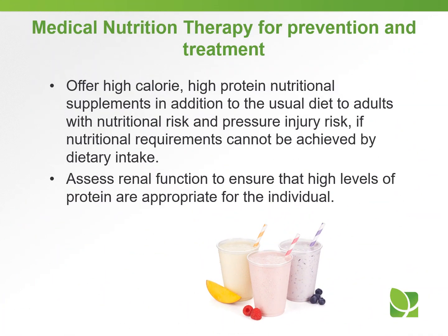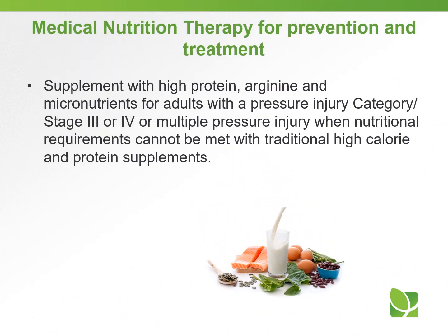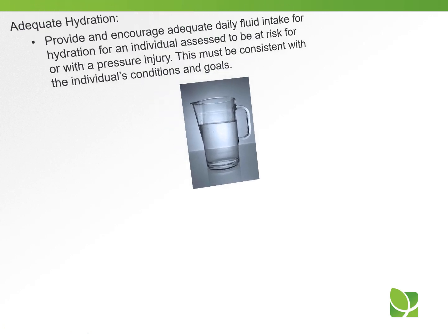Offer high calorie, high protein nutritional supplements in addition to the usual diet to adults with nutritional risk and pressure injury risk if nutritional requirements cannot be achieved by dietary intake. Assess renal function to ensure that high levels of protein are appropriate for the individual. Supplement with high protein, arginine, and micronutrients for adults with a pressure injury category/stage 3 or 4 or multiple pressure injuries when nutritional requirements cannot be met with traditional high calorie and protein supplements.